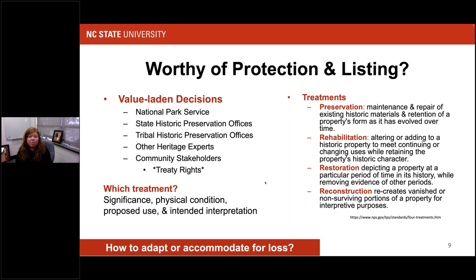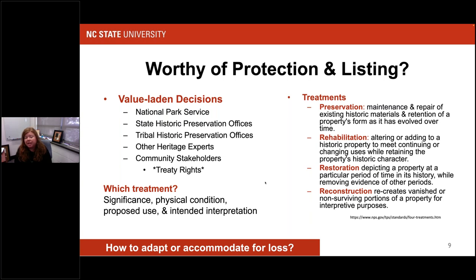When thinking about which treatments to apply, you have to consider significance, the current condition of the resource, the proposed use, and the intended interpretation. The Park Service thinks about preservation, rehabilitation, restoration, and reconstruction as different types of treatments for historic preservation. There are also different types of adaptation treatments that could be applied, including letting things go and acknowledging that loss is something acceptable. But how do we determine which adaptation actions — whether moving a lighthouse or letting it fall into the sea — should we be thinking about?